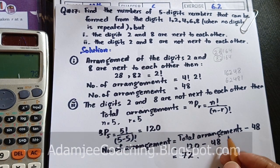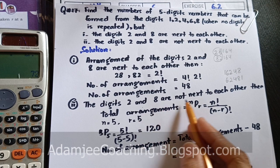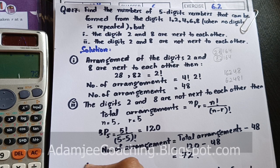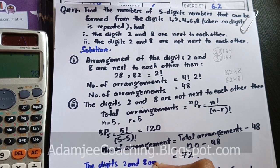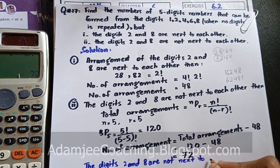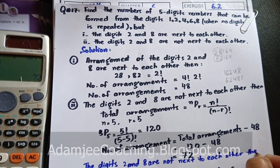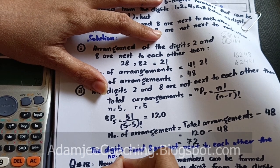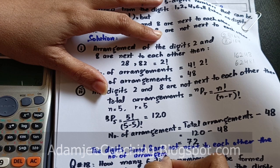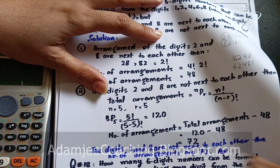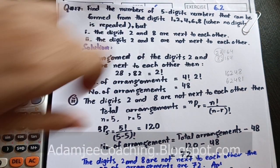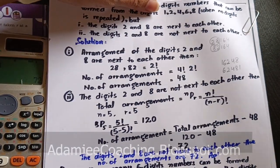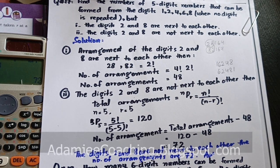The number of arrangements where digits 2 and 8 are not next to each other is 72. So if 2 and 8 are not next to each other, you have 72 arrangements, and if they are next to each other, you have 48 arrangements. Exercise 6.2 Question Number 17 — I hope you understood the question. Please like, subscribe the channel, and comment if you have questions. See you in the next video. Allah Hafiz.